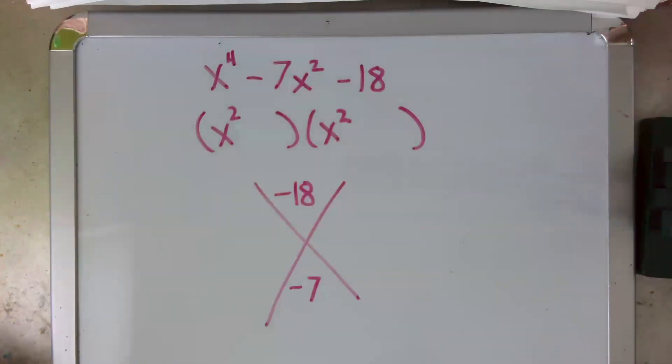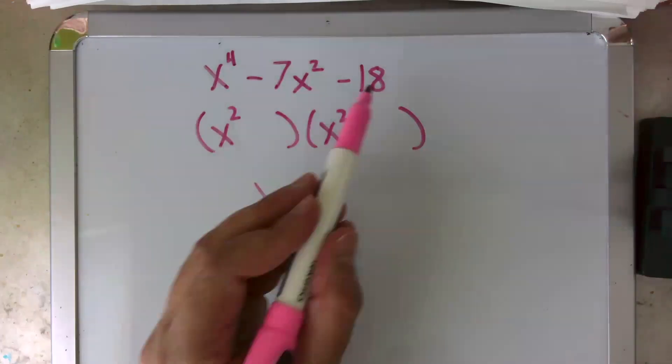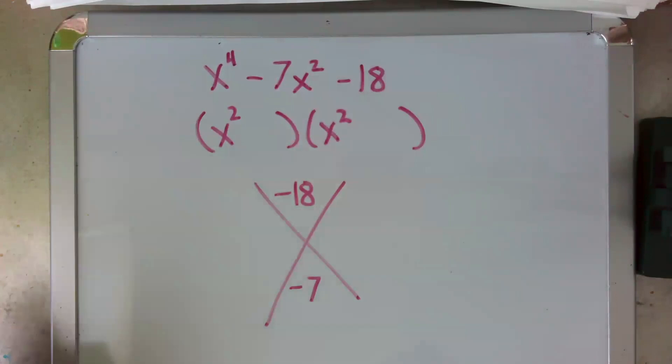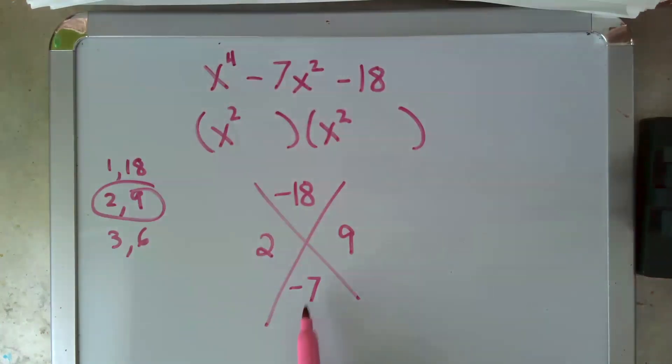So we have a negative 18 on top, that's the a times c. If this isn't familiar to you, go check out this video on the x method, then come on back. And we have our b, negative 7 down here. So now we'll do a quick factor list. And we see that 2 and 9 are what are going to come together to be a negative 7. And then because our 7 wants to be negative, we know our larger of those two will be the negative one. So now we go ahead and fill those into our parentheses.